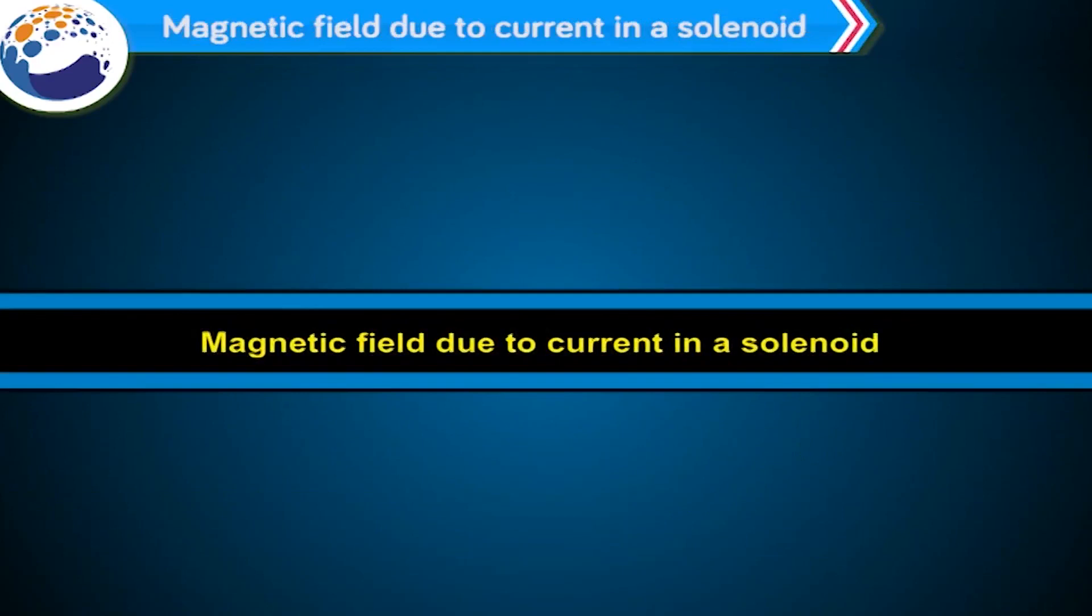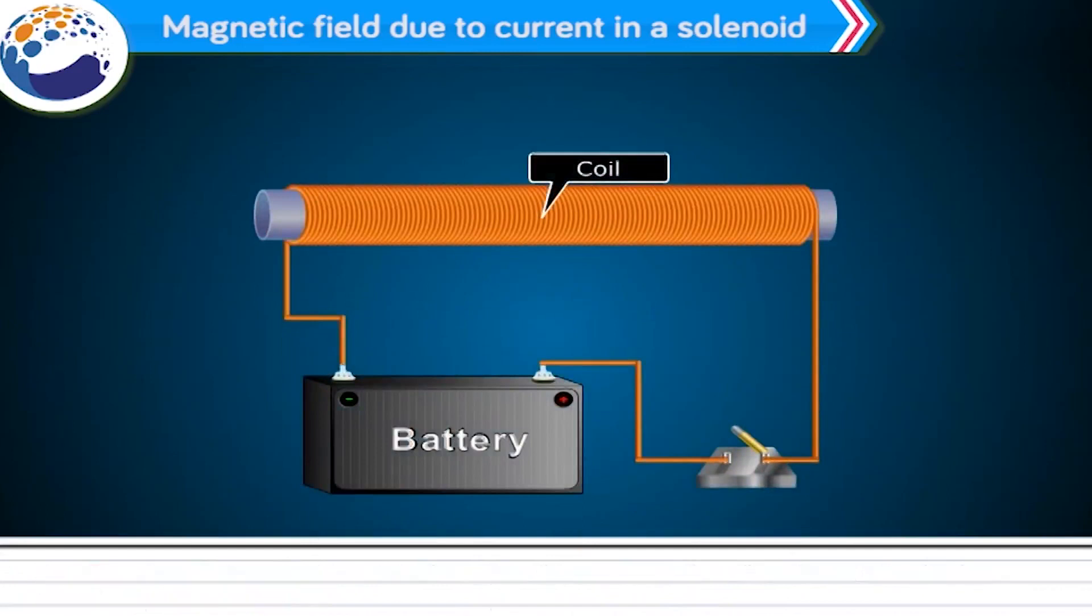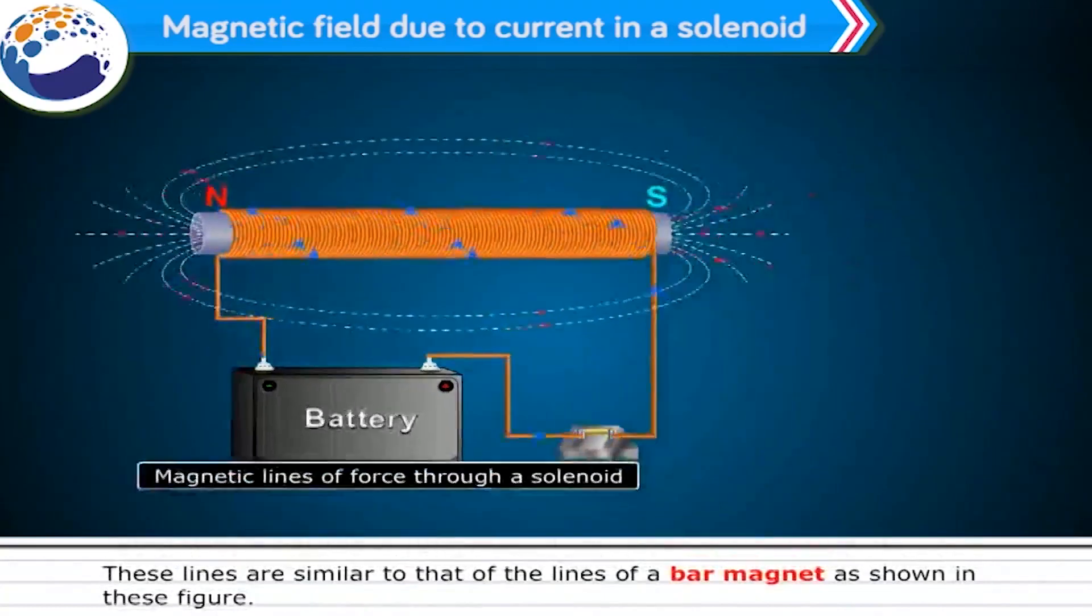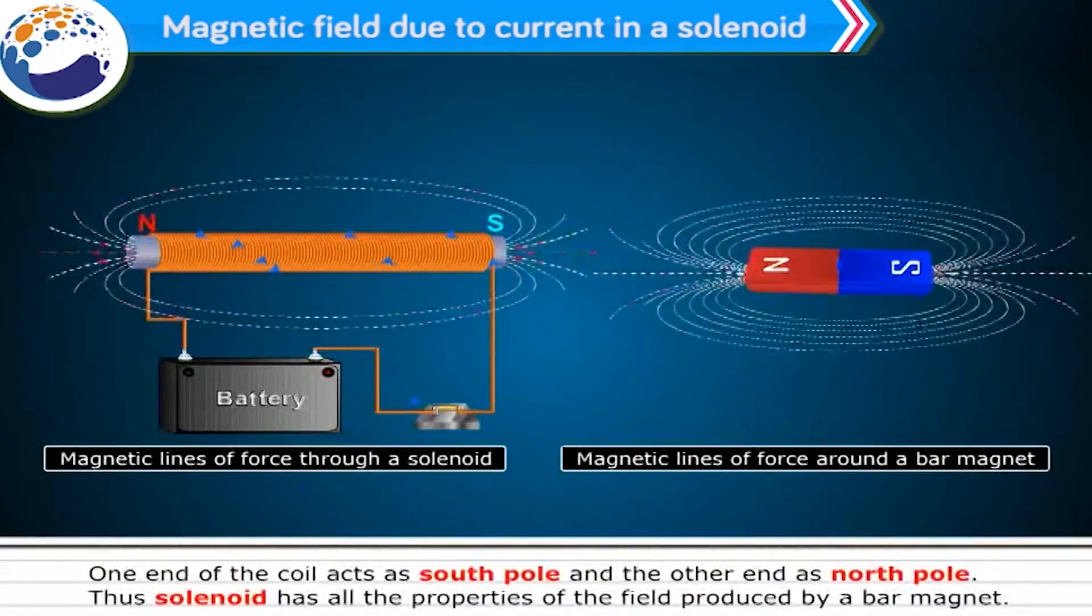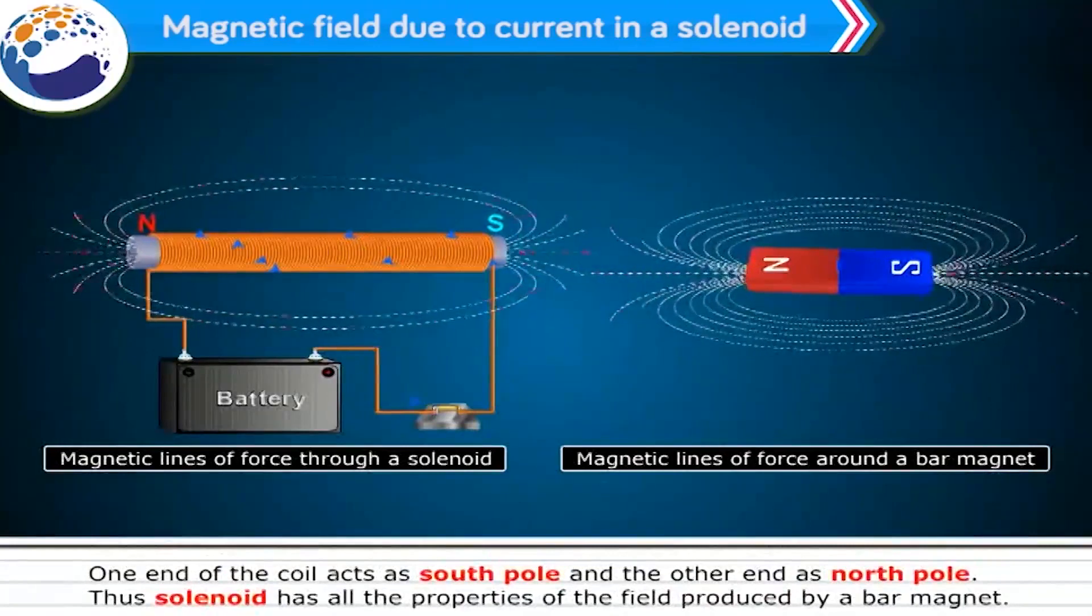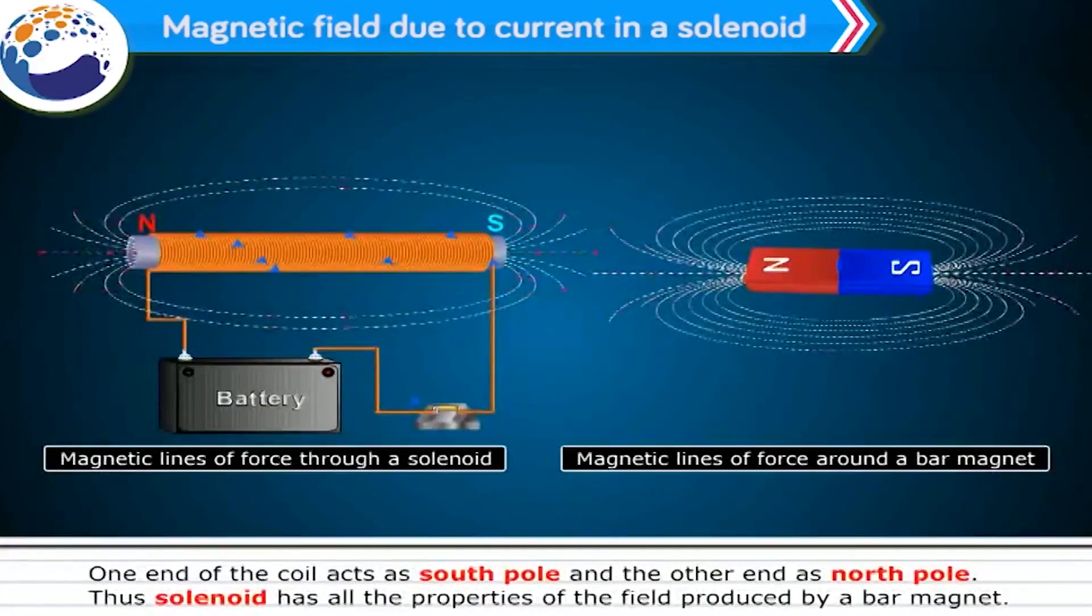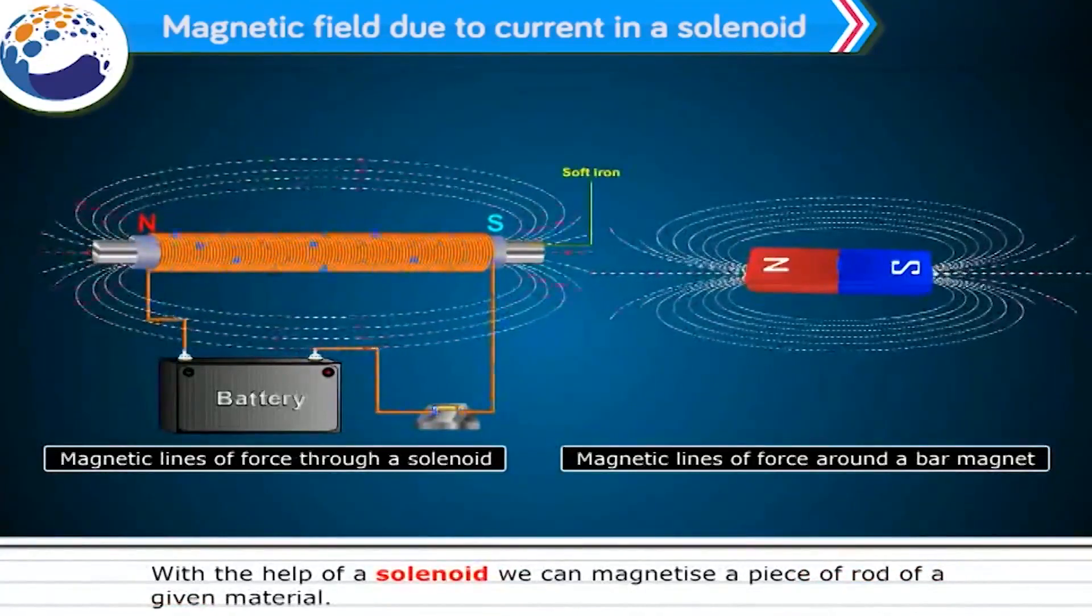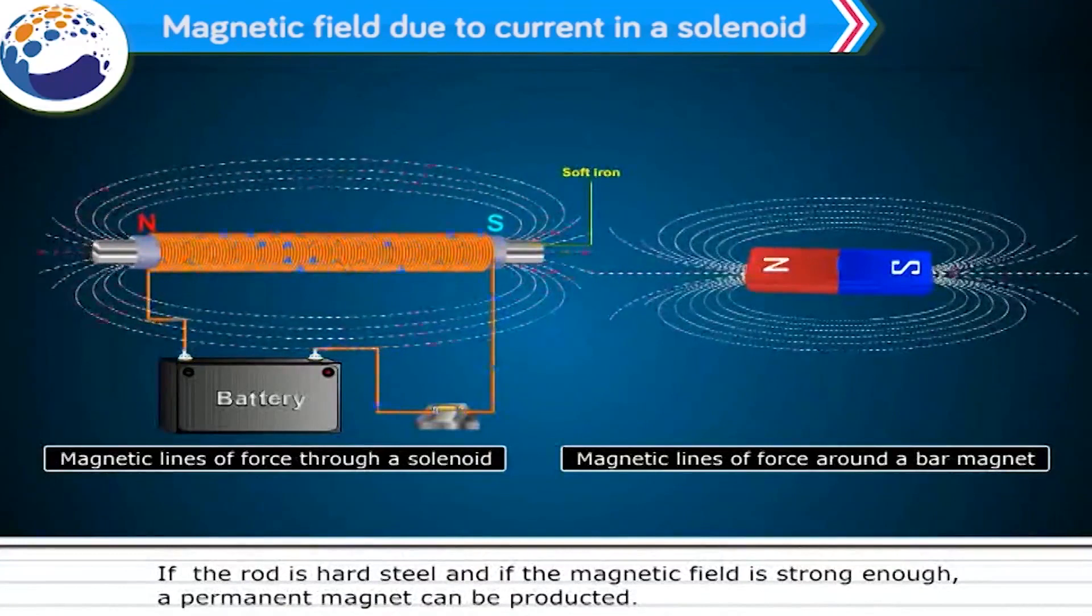Magnetic field due to current in a solenoid. A coil of many turns of insulated copper wire wrapped in the shape of a cylinder is called a solenoid. The magnetic field lines in a solenoid through which current is passed are shown in figure. These lines are similar to that of the lines of a bar magnet. One end of the coil acts as south pole and the other end as north pole. Thus, solenoid has all the properties of the field produced by a bar magnet. With the help of a solenoid, we can magnetize a piece of rod of a given material. If the rod is hard steel and if the magnetic field is strong enough, a permanent magnet can be produced.